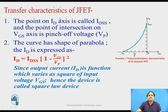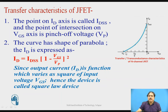These are the parameters we can observe from the graph. The drain current ID is expressed by a formula. The shape of the transfer characteristic graph is a parabola, and the equation for this parabola is: ID = IDSS × (1 − VGS/VP)².